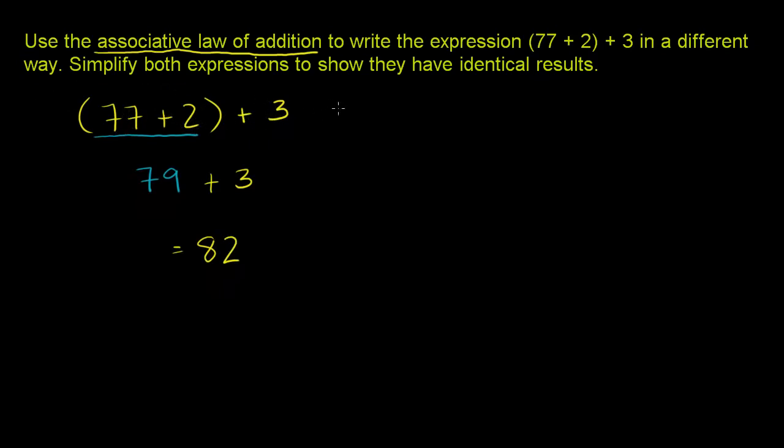So this is the exact same thing as we could write it this way: 77 plus 2 plus 3. If we have no parentheses here, this is actually the same thing as this over here, because we'd go 77 plus 2 is 79, plus 3 is 82.